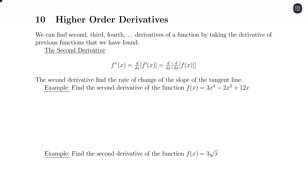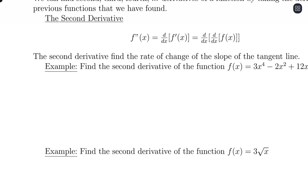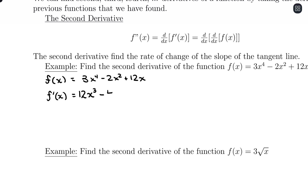So let's talk about finding our second derivative. Let's find the second derivative of 3x to the fourth minus 2x squared plus 12x. So first derivative — I'm going to apply the power rule. 3 times 4 is 12, so 12x to the 3rd, minus 2 times 2 is 4 times x to the 1st. Plus, the derivative of 12x leaves us with 12. So the first derivative is 12x cubed minus 4x plus 12.